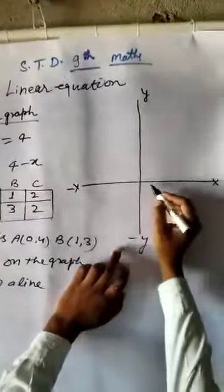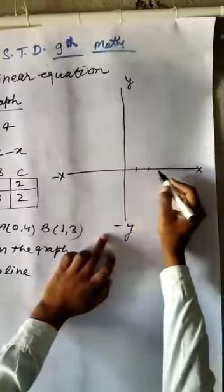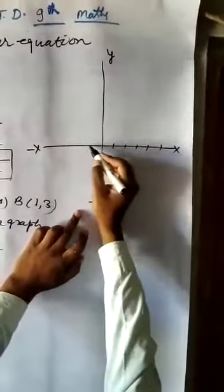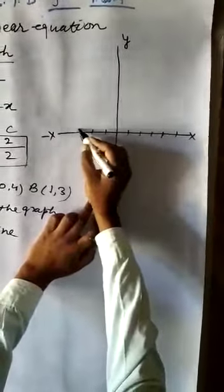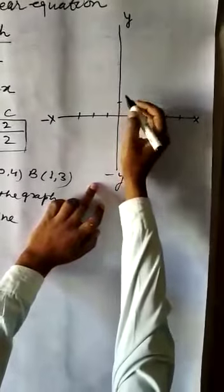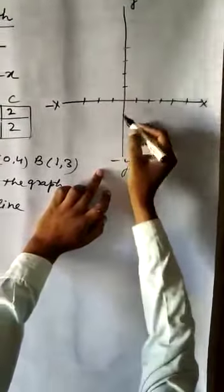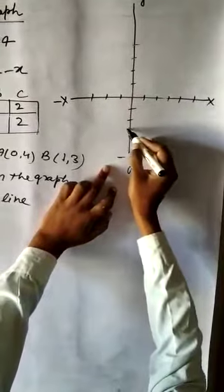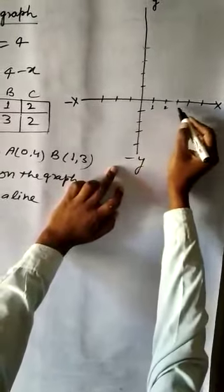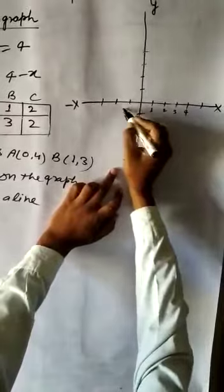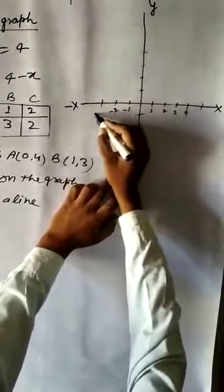In the graph paper x axis minus x, y minus y. Taking 1 centimeter equal to 1, 1 2 3 4 5. Minus 1, minus 2, minus 3. 1, 2, 3, 4. 1, 2, 3, 4. Minus 1, minus 2, minus 3.